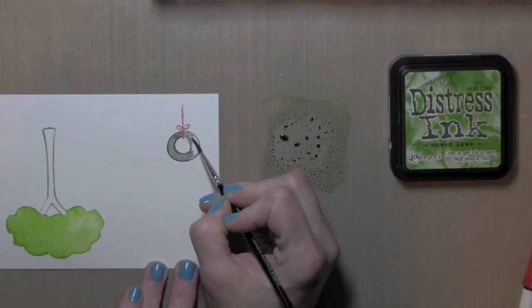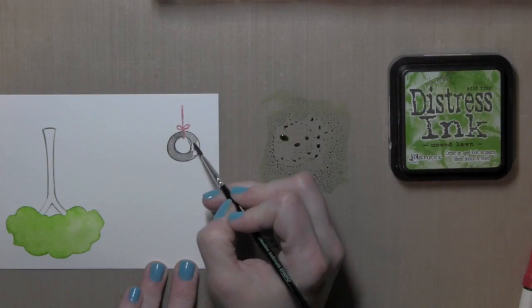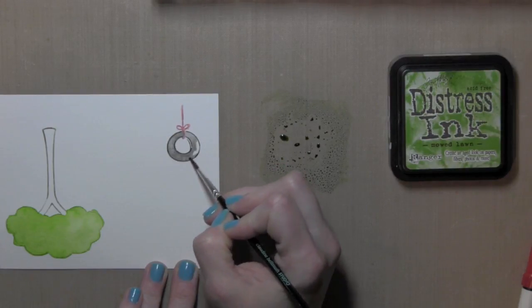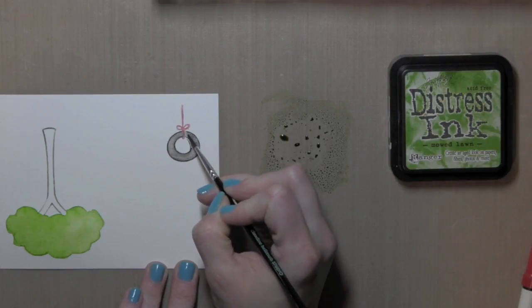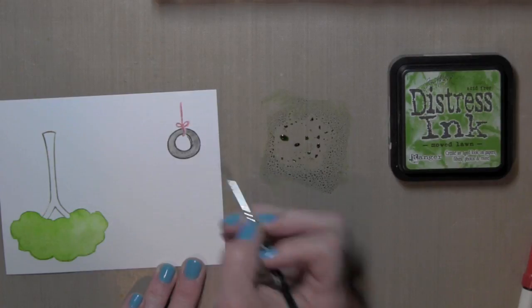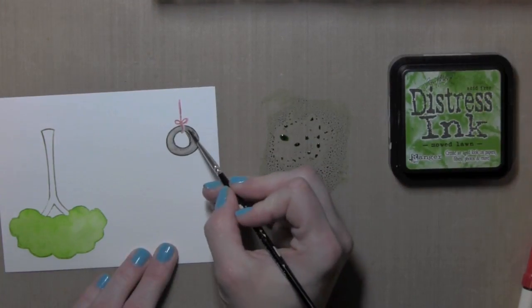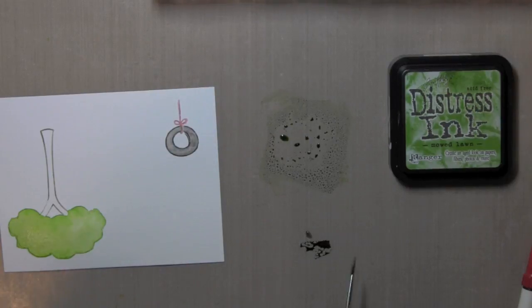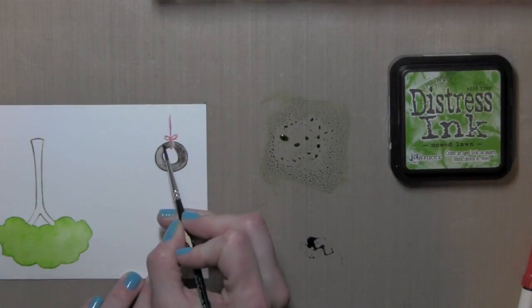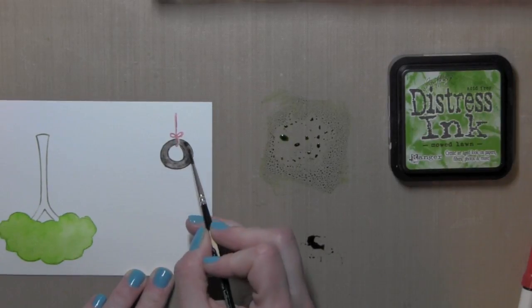I'm using my damp paintbrush again to pull that color from the outside stamped line as well as using additional color from the marker to fill in and to darken it up a little bit. I'm using a pretty fine tip paintbrush here, adding a little black from my marker onto the craft mat and just pulling in more color to darken that up.